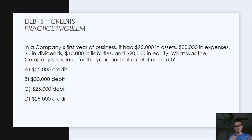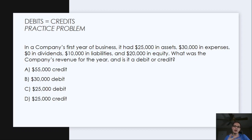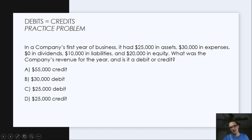So let's go through a quick practice problem. I'm always going to be using examples that I would give as tests in a college course, so these will be extremely relevant to your homework or work. Here's the problem: a company's first year of business had $25,000 in assets, $30,000 in expenses, zero in dividends, $10,000 in liabilities, and $20,000 in equity. What was the company's revenue for the year, and is it a debit or a credit?